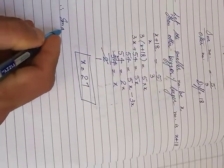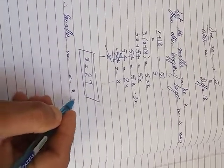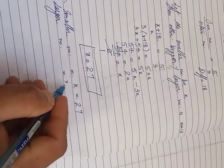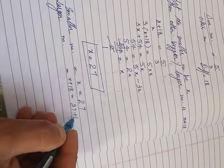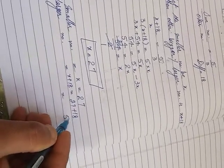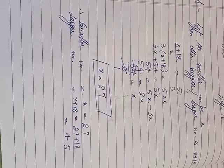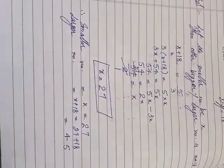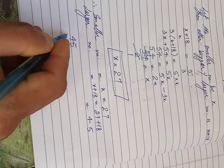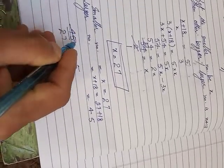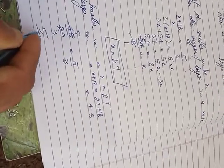Therefore the smaller number is equal to x, which is equal to 27. The larger number is x plus 18, which equals 27 plus 18, equal to 45. Check: the larger number divided by the smaller number is 45 by 27, which equals 5 by 3. Answer is correct.